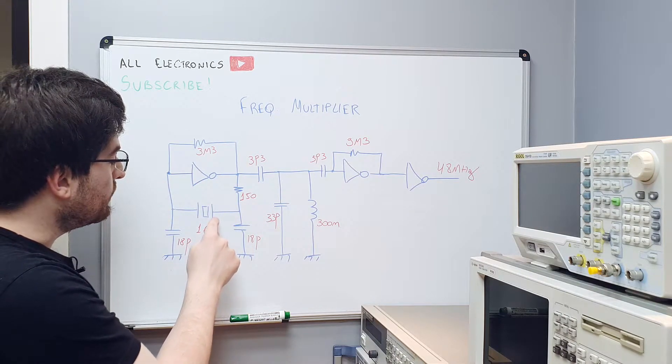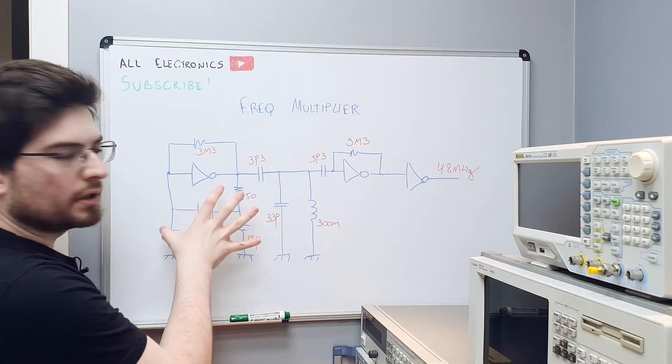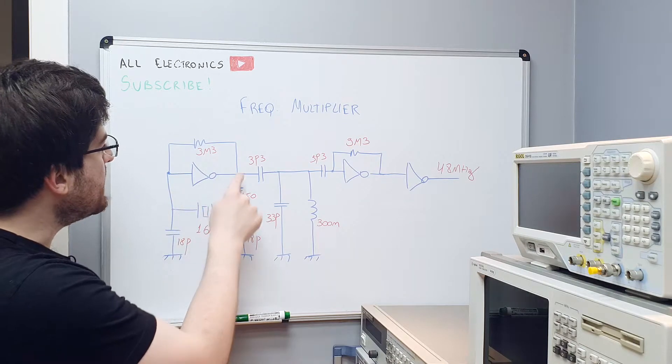This is the circuit I designed and prototyped here and it works very well. In the input we have a Pierce oscillator with a 16 megahertz crystal here, a standard Pierce oscillator. It has a linear CMOS stage here, the oscillator here.